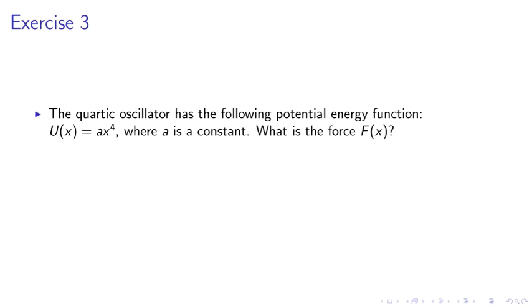Exercise 3. The quartic oscillator has the following potential energy function. U of X equals AX to the 4th, where A is a constant. What is the force F of X?